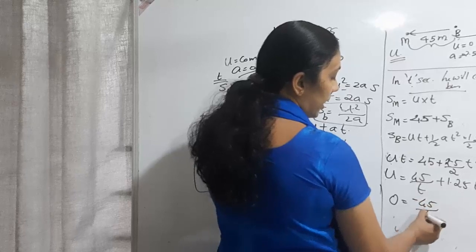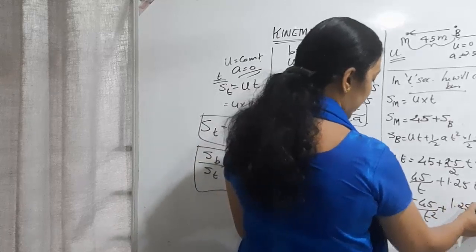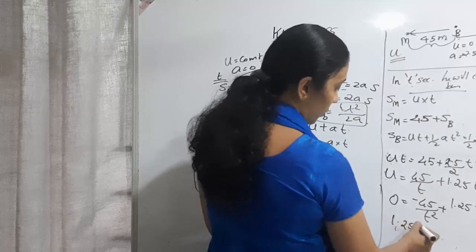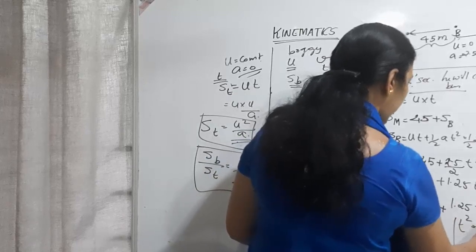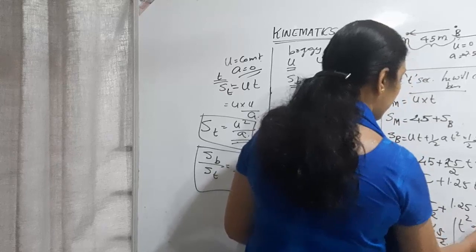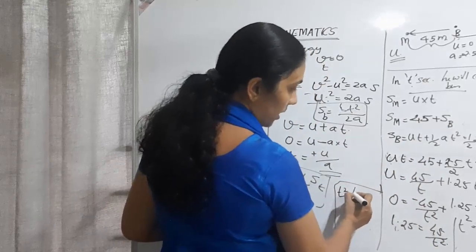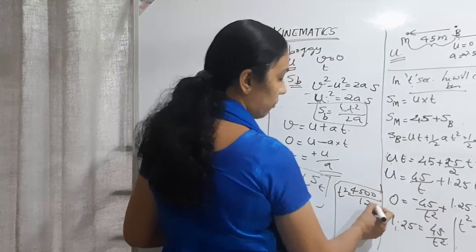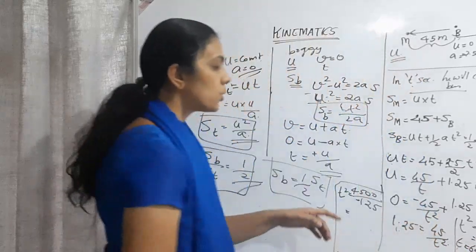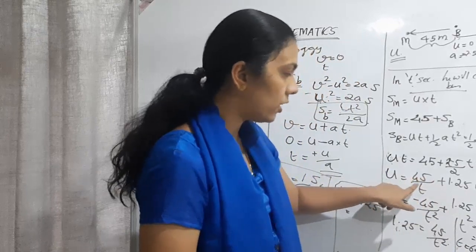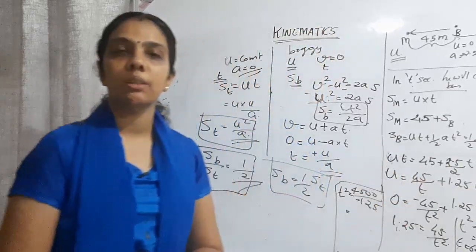Setting du/dt = 0: 1.25 = 45/t², so t² = 45/1.25 = 4500/125 = 36. Therefore t = 6 seconds. Substituting back: u = 45/6 + 1.25 × 6. We will get the initial velocity u from this calculation.